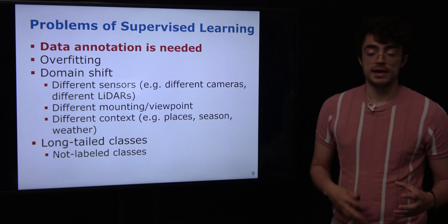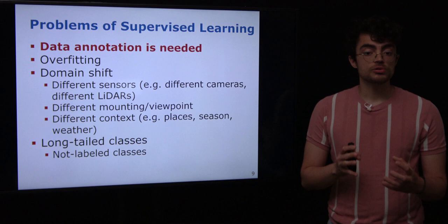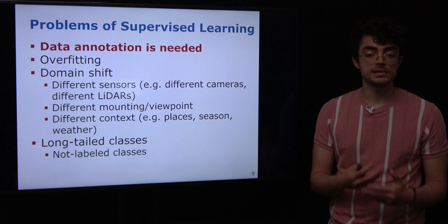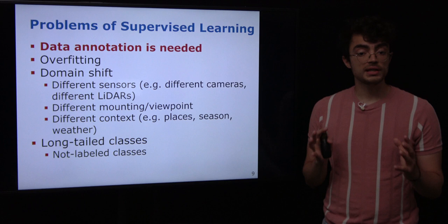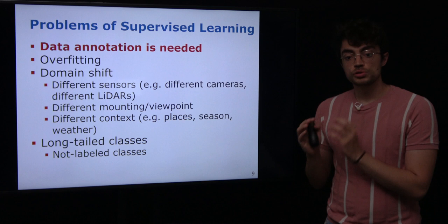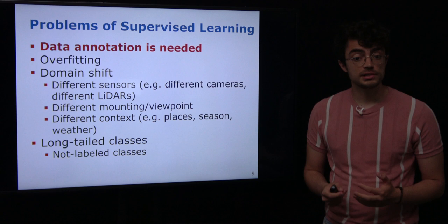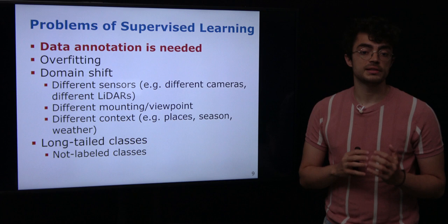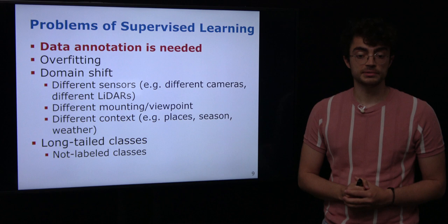Besides that, since we have many different LiDAR sensors with different numbers of bins made by different manufacturers, and we can also have the LiDAR in different viewpoints, this affects how the scene is represented. This can lead to the problem of domain shift, where we train our model with one LiDAR sensor setup and when we deploy to real-world data collected with a different sensor setup, the performance drops drastically because the scene is represented very differently.